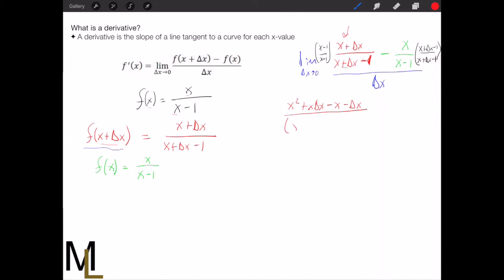we get x squared plus x delta x minus x minus delta x all over, and let's leave these separated because it might help out later. x plus delta x minus 1.